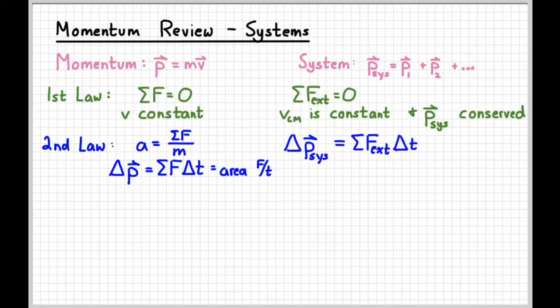The same thing would be true for a system of objects, only the net external force would be the external force on the entire system. And so we can't figure out the force on a single object within a system if we only know information about the system as a whole. We're going to look at an example of that a little bit later.